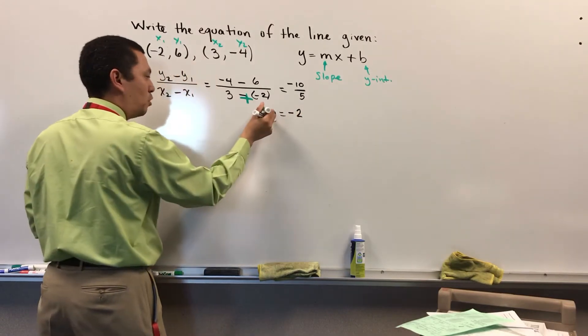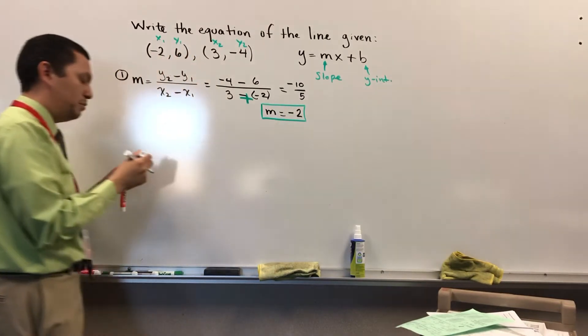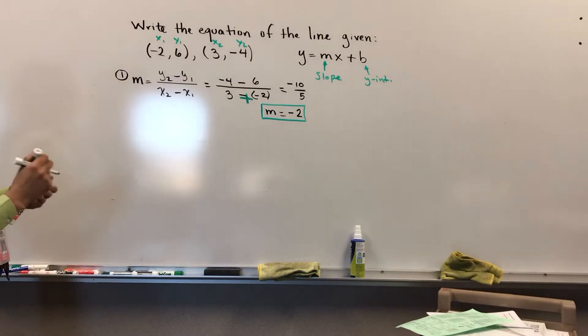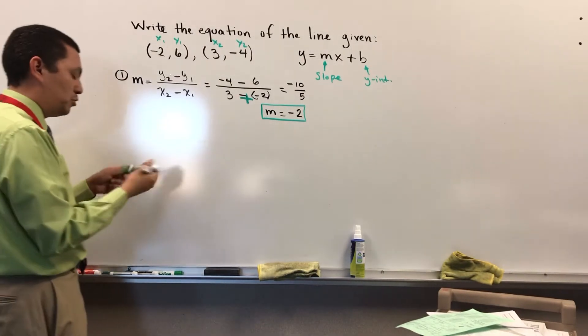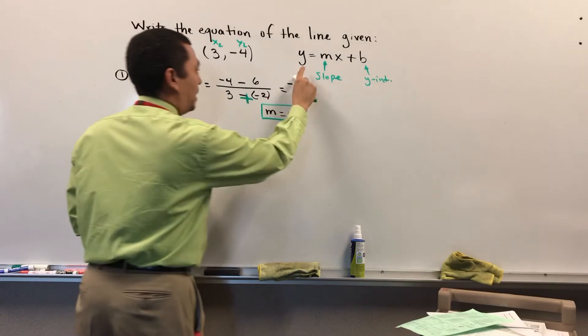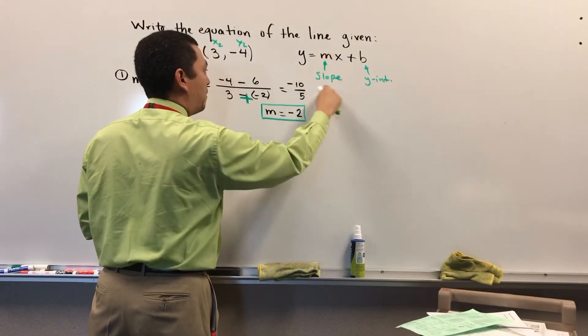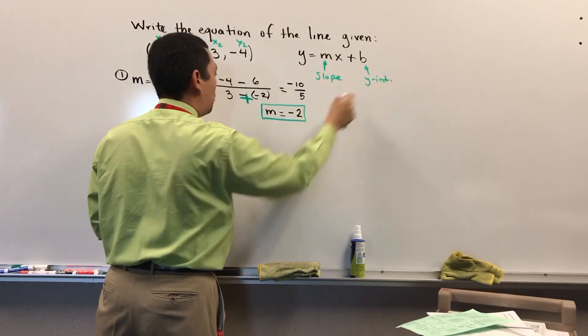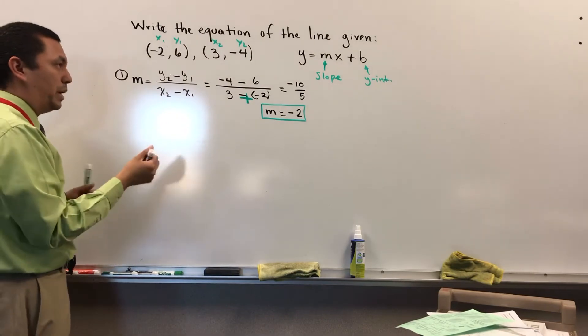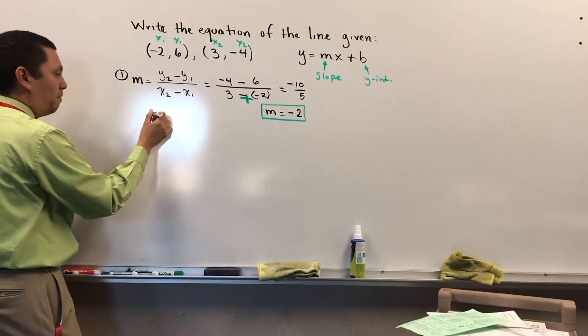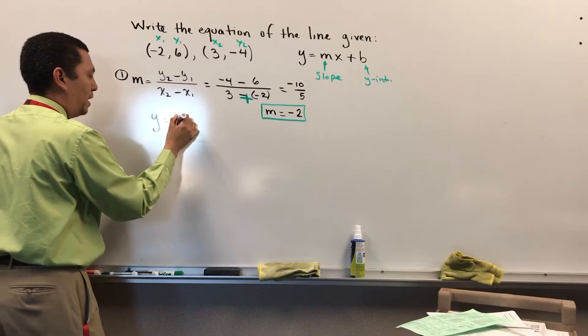So I have my slope, which is negative 2. I don't have the y-intercept because I needed a slope-intercept form. I found the slope, I'm missing the y-intercept. That's when I'm going to use the slope-intercept form of the equation of the line.